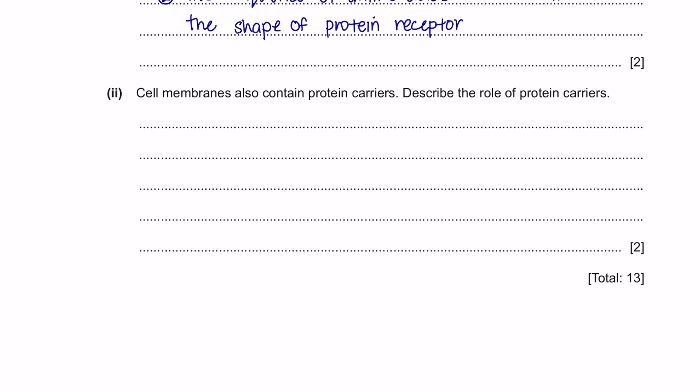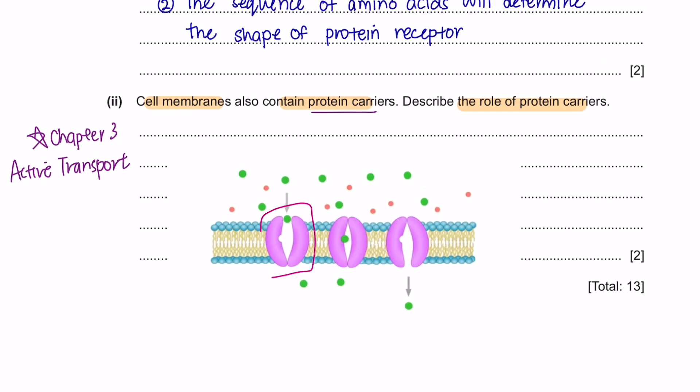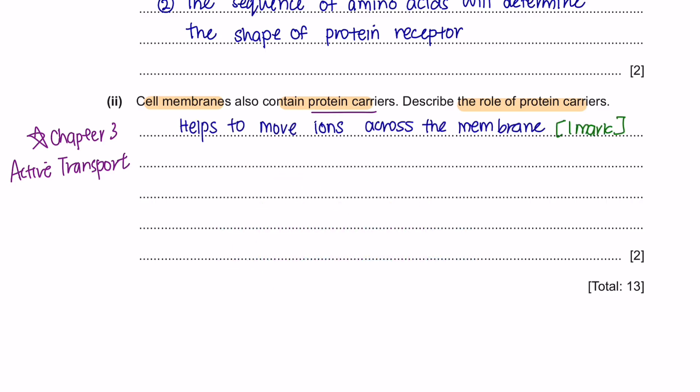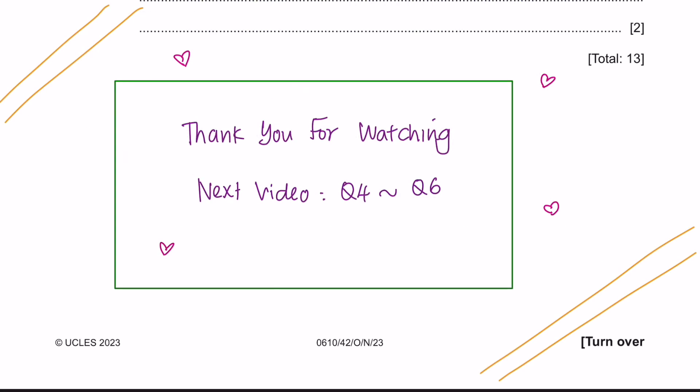Next, part 2. Cell membranes also contain protein carriers. Describe the role of protein carriers. This question is from the chapter Active Transport. The protein carriers will help move or carry the molecules or ions across the membrane. And this process here needs energy, so it is done by active transport. If you'd like to add, you can also mention that active transport happens against the concentration gradient. Thank you for watching. I'll be explaining question 4 to question 6 in the next video.